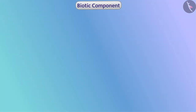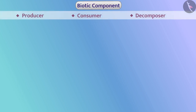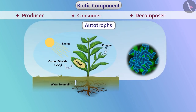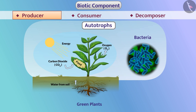If we talk about biotic components, they can be of different types. Producers — the autotrophs, such as green plants and some bacteria — produce food for the entire ecosystem through photosynthesis and are known as producers.